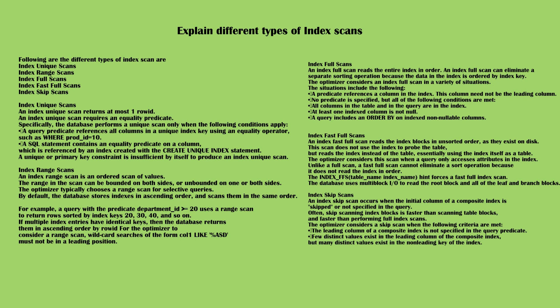Index skip scans: an index skip scan occurs when the initial column of a composite index is skipped or not specified in the query. Often, skip scanning index blocks is faster than scanning table blocks and faster than performing full index scans. The optimizer considers a skip scan when the leading column of a composite index is not specified in the query predicate, few distinct values exist in the leading column of the composite index, but many distinct values exist in the non-leading key of the index.